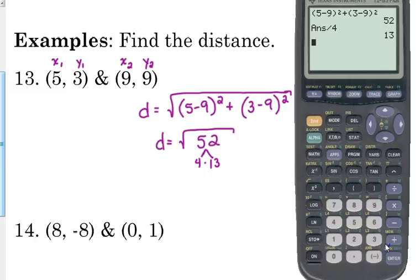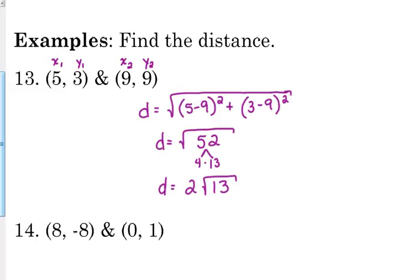So 52 is 4 times 13. We can take the square root of 4. It is 2, so it comes out of the square root. 13 is not a perfect square. It's not divisible by a perfect square, so it stays under the square root. Okay, so we're looking at the list right here: 1, 4, 9, 16, 25, 36. Those are our options there for perfect squares.